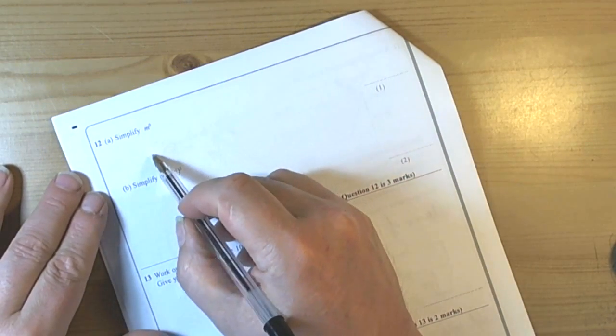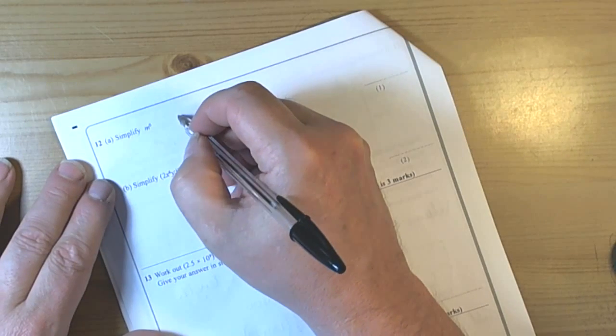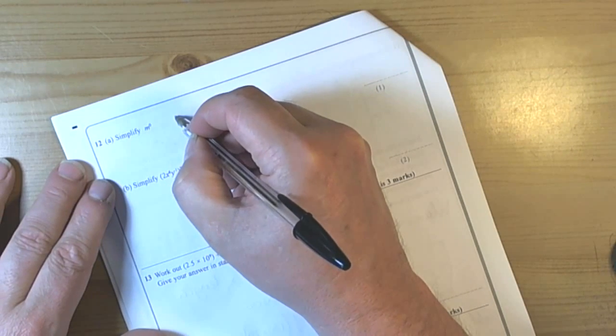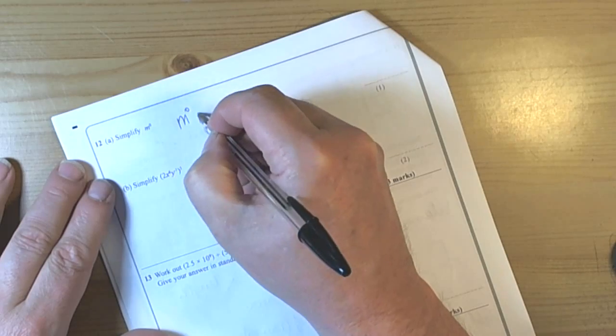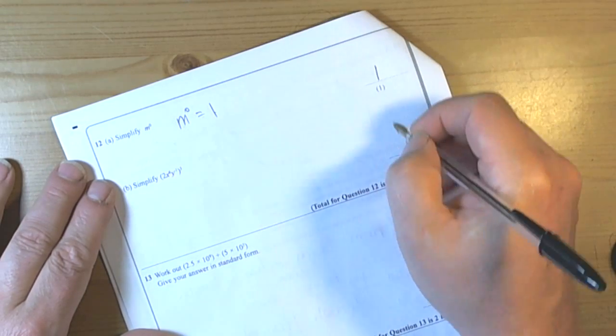OK, so this question is asking us to simplify m to the power of 0. Well, one of the facts we've got to remember is that anything to the power of 0 is always 1. So that's a fairly straightforward thing, anything to the power of 0 is always 1, so the answer will be 1.